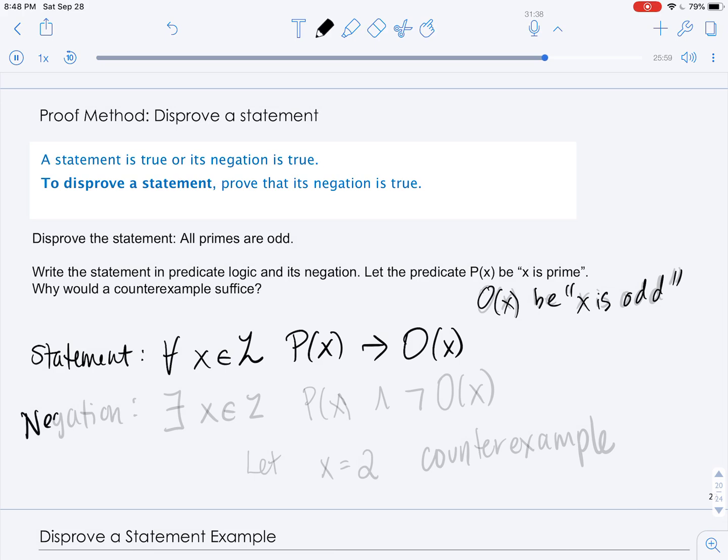Now we want to negate it. When we negate it, the for any becomes there exists.